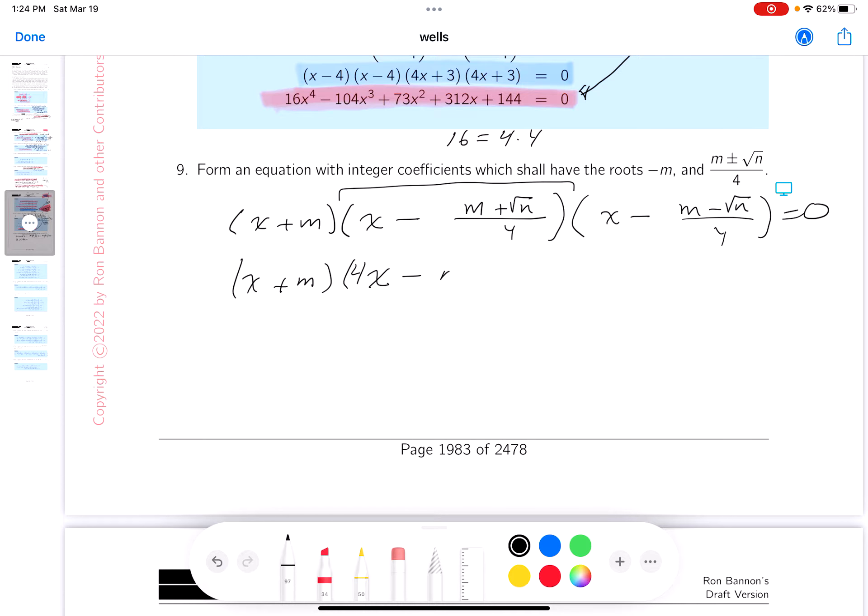So what do you get? 4x minus m minus root n. Well, I'm going to associate a factor of 4 with this guy. What do you get? 4x minus m plus root n equals 0.